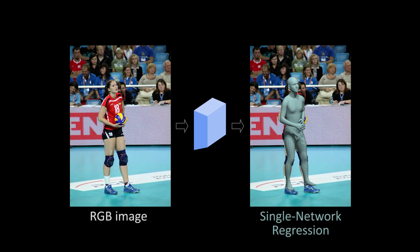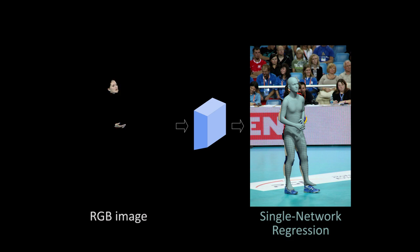Jointly predicting bodies, hands and faces from a single network leads to mediocre results. One reason is the small size of hands and faces in full body images. Reasoning about them from low resolution image patches is hard.